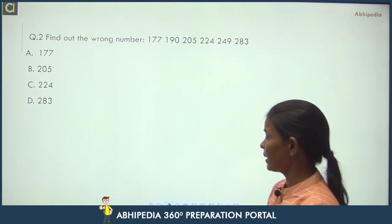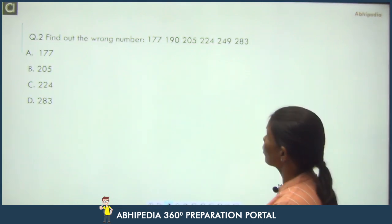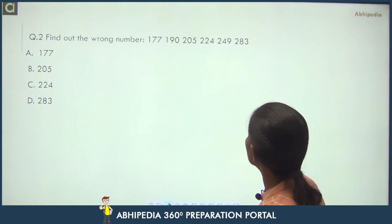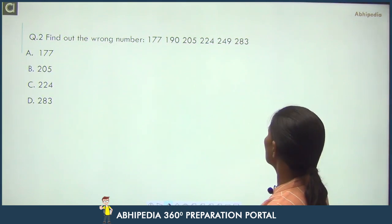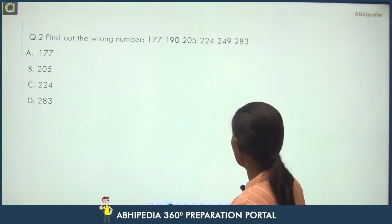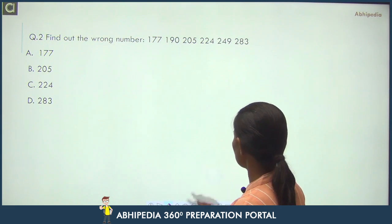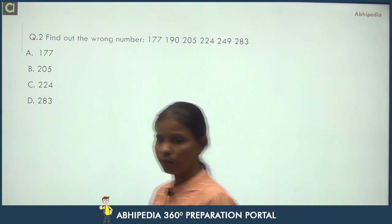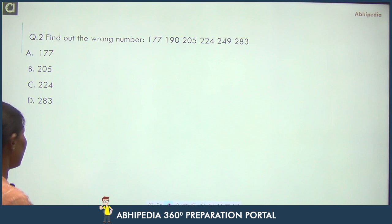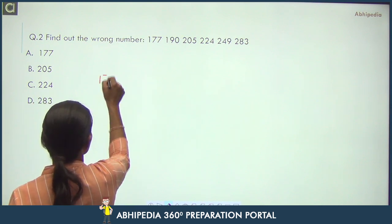Next question: Find out the wrong number. The series is 177, 190, 205, 224, 249, and 283. First, we will check the difference.